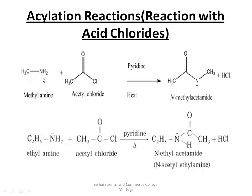The amine we take here is CH₃NH₂, which is methylamine — a primary amine. When methylamine reacts with acetyl chloride in the presence of pyridine, one hydrogen from NH₂ and the chlorine are removed as HCl. The remaining NH group attaches to the carbonyl carbon, forming N-methyl acetamide.